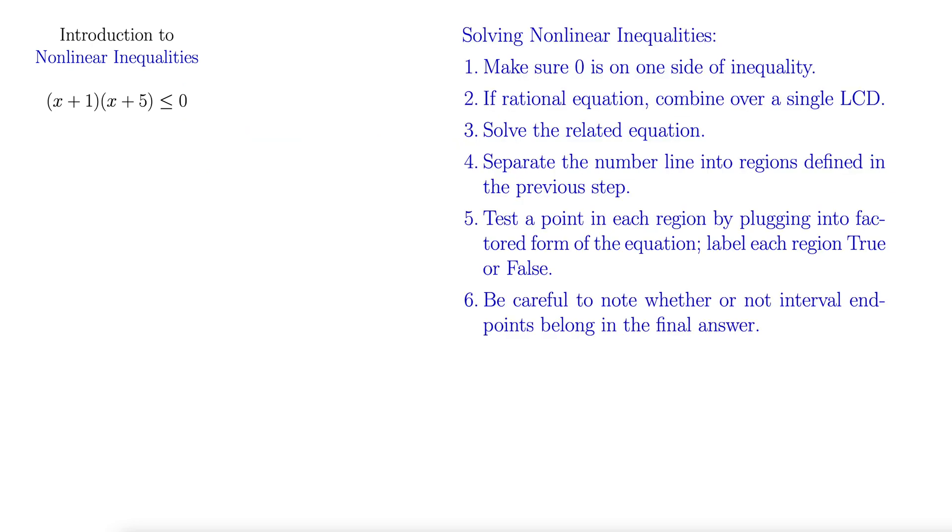So here are the steps. And there are a lot of steps, but that's just par for the course for these kinds of exercises. Step one: make sure zero is on one side of the inequality. Well, zero is on one side of the inequality. That's good news. If it's a rational equation, combine over a single LCD. Well, it's not a rational equation, so we're off the hook.